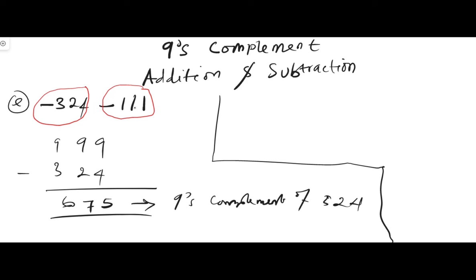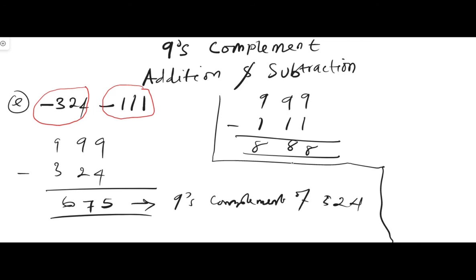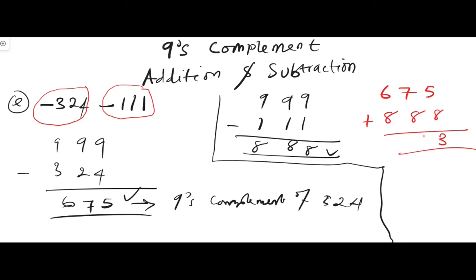Next, find the nine's complement of 111, since it also has a negative sign. We have 999 minus 111: nine minus one is eight, nine minus one is eight, nine minus one is eight. So the nine's complement of 111 is 888. Now add 675 and 888: five plus eight is thirteen — write three carry one; eight plus eight plus one carry is seventeen — write seven carry one.